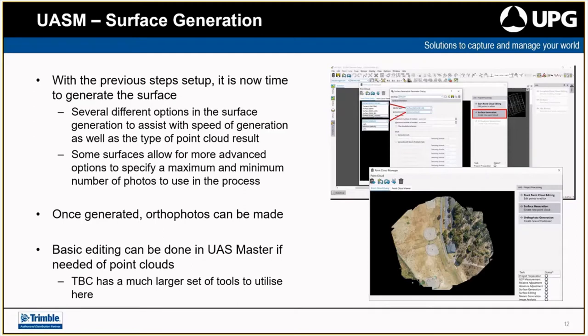Once you run the surface generation step it can take time — for the example dataset we have, it was taking about six and a half to seven minutes to generate the more detailed surface models. The bigger the project and the more detail there is, the longer the step will take. Once you've processed your point cloud, you can then run through and generate ortho photos, or bypass the point cloud step and go straight to generating ortho photos. Generally I would generate ortho photos after I've created a terrain model.